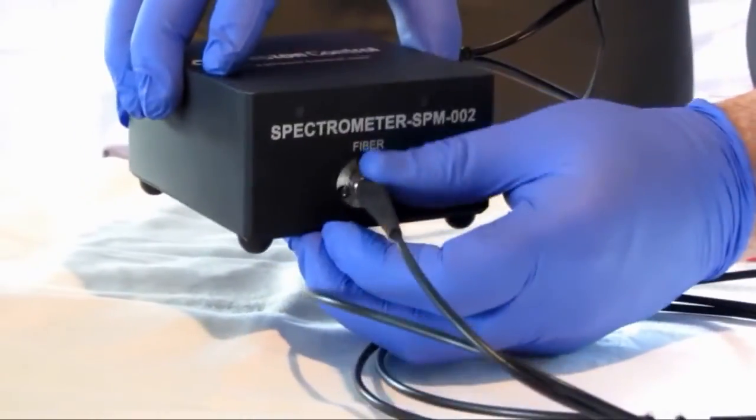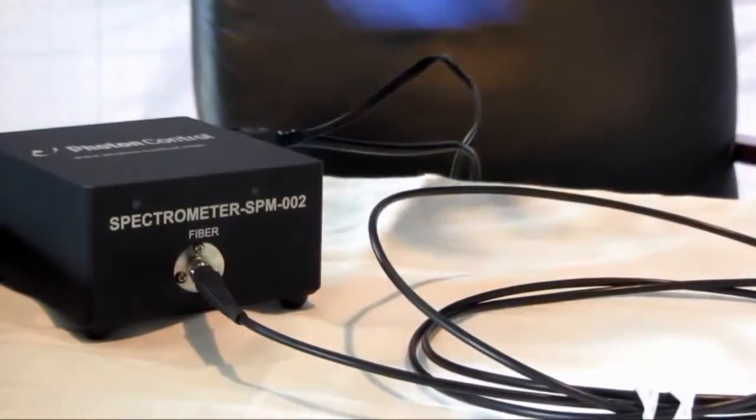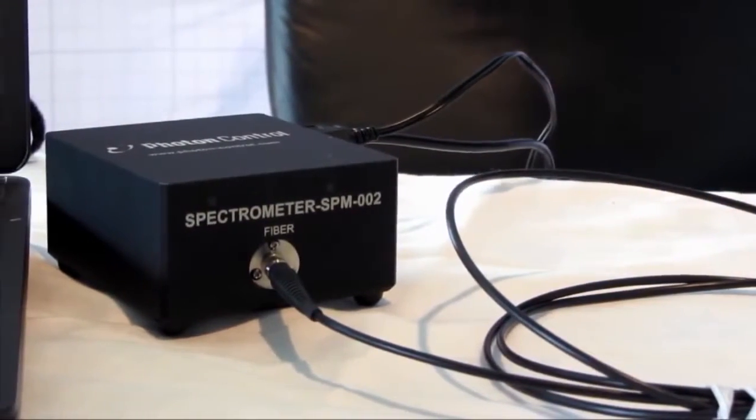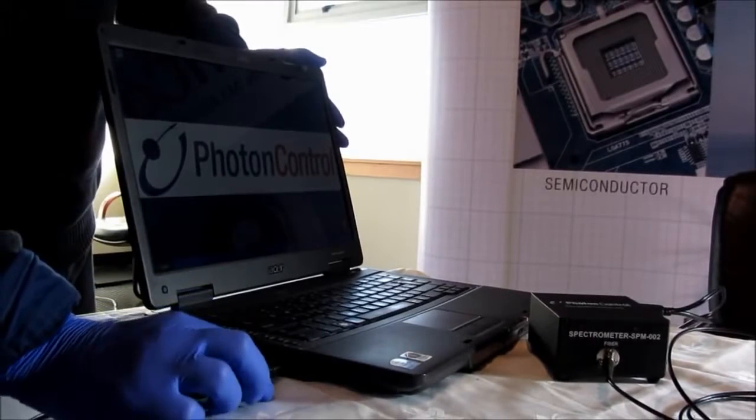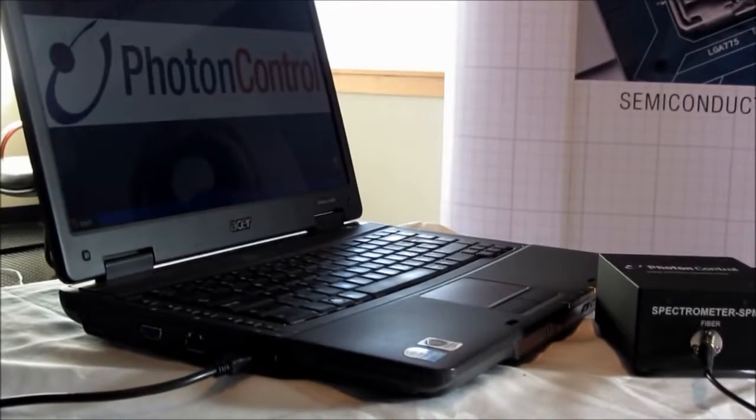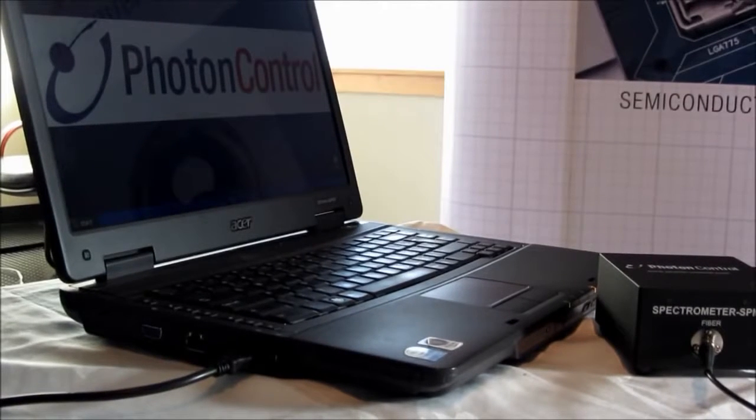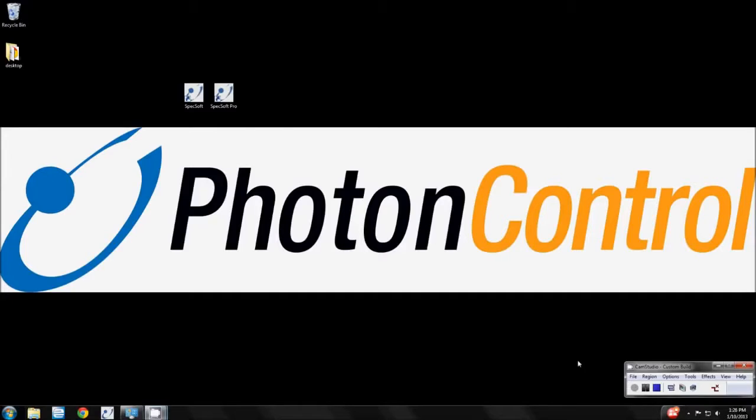Connect your SMA fiber patch cord to the spectrometer. Then finally connect the spectrometer to your computer through the USB 2.0 high speed connection. I'll pass it over to Nick for the complete color filter absorption analysis.